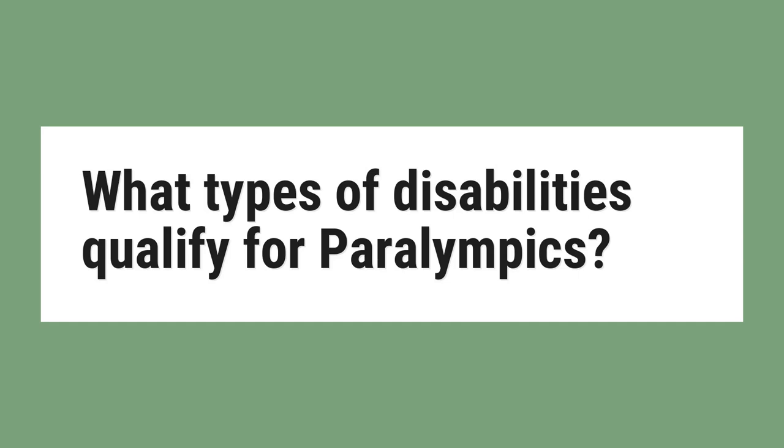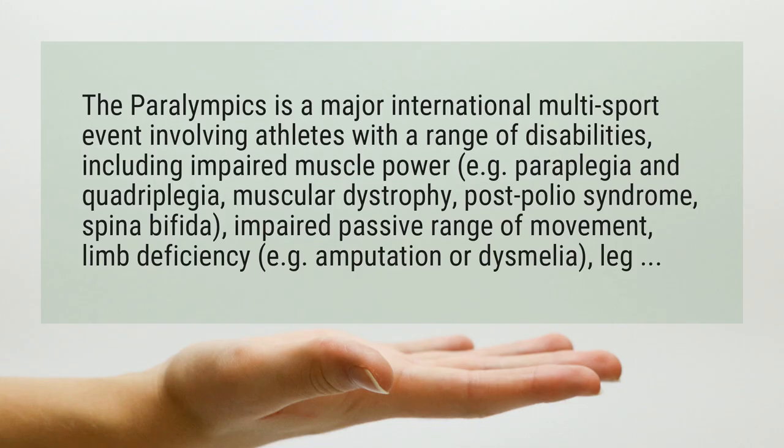What types of disabilities qualify for Paralympics? The Paralympics is a major international multi-sport event involving athletes with a range of disabilities, including impaired muscle power, e.g. paraplegia and quadriplegia, muscular dystrophy, post-polio syndrome, spina bifida, impaired passive range of movement, limb deficiency, e.g. amputation or dysmelia.